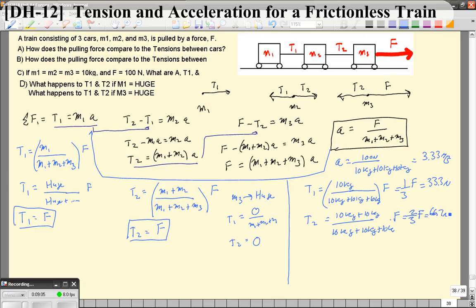So when you look at this, the tensions are not the same, because you can think of the objects behind the tension force almost as if they're one object. So the force required to move object one is less than the force required to move object one and two, which is less than the force to require objects one, two, and three.